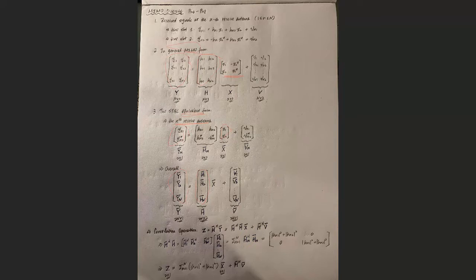It's still no trouble because if we want to cancel out the effect of fading, we still need to do correlation. The big H is constituted by H for each receiver antenna, and for each one of them, the Hermitian transpose of that component matrix multiplied by that component matrix is an identity matrix. So in the end, you'll get a summation of all the received signal models — equivalent to the previous case when we only have one receive antenna.